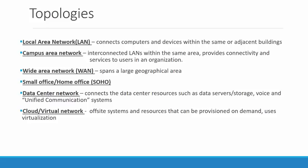The data center network connects all the data center resources — generally servers, storage, voice, and unified communication systems. When looking at a data center network, we secure two things: the outside perimeter and the inside perimeter. The outside perimeter can include fences, gates, alarms, video surveillance, and security officers outside.